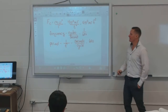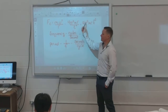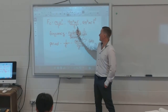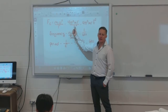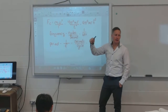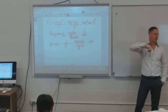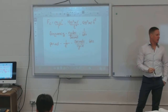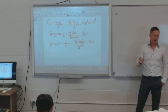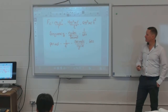Depending on what you're given: if you're given frequency, use the frequency equation; if you're given period, use that one. It doesn't matter — all it is telling you is how long it takes for the object to go around the circle.